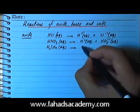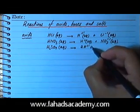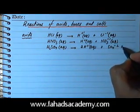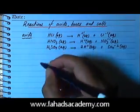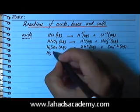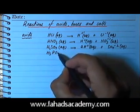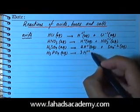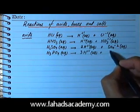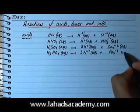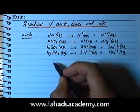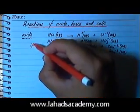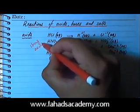Similarly you had H2SO4, which was sulfuric acid. When it's dissolved in water it's going to ionize and produce 2 H+ ions and 1 SO4 2- ion. We also have phosphoric acid, H3PO4, and when it's aqueous it's going to produce 3 H+ ions and 1 PO4 3- ion. Most of these were strong acids.